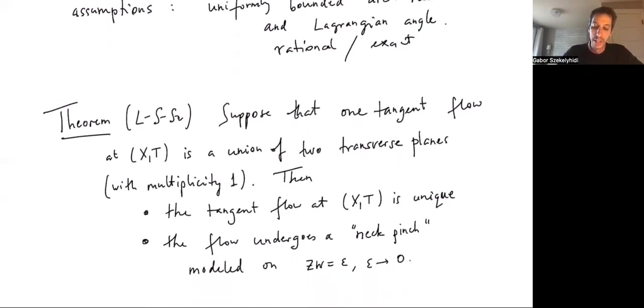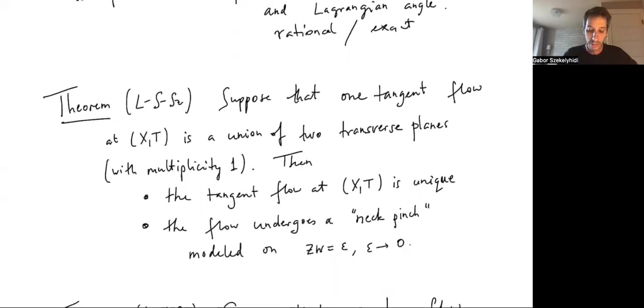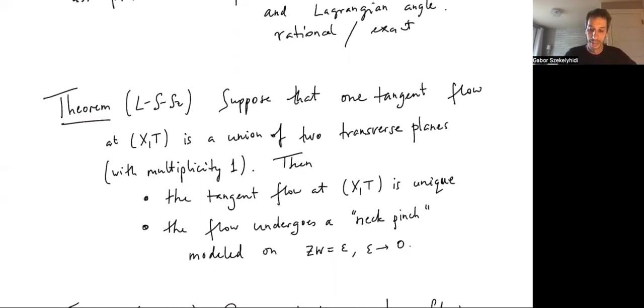The first result is the following. Suppose that your singularity that you meet is such that one tangent flow is given by a union of two transverse planes with multiplicity one. Then really the main result is that this tangent flow is unique. As I said, this uniqueness is really one of the fundamental questions in this area. And then, as essentially a consequence of this, one can show that the flow will undergo something called a neck pinch. You can just visualize this as looking at this family of complex hyperbola, zw = ε, as ε goes to zero. As you can see, this will, in the limit, you just get two planes. So this is perhaps the simplest kind of singularity that we would like to understand.